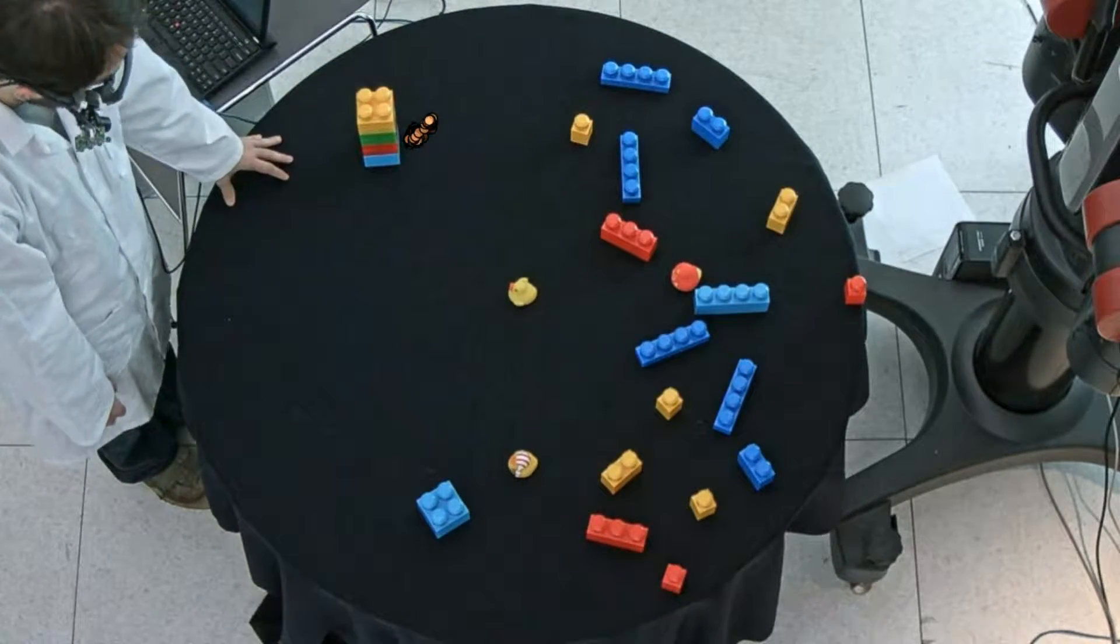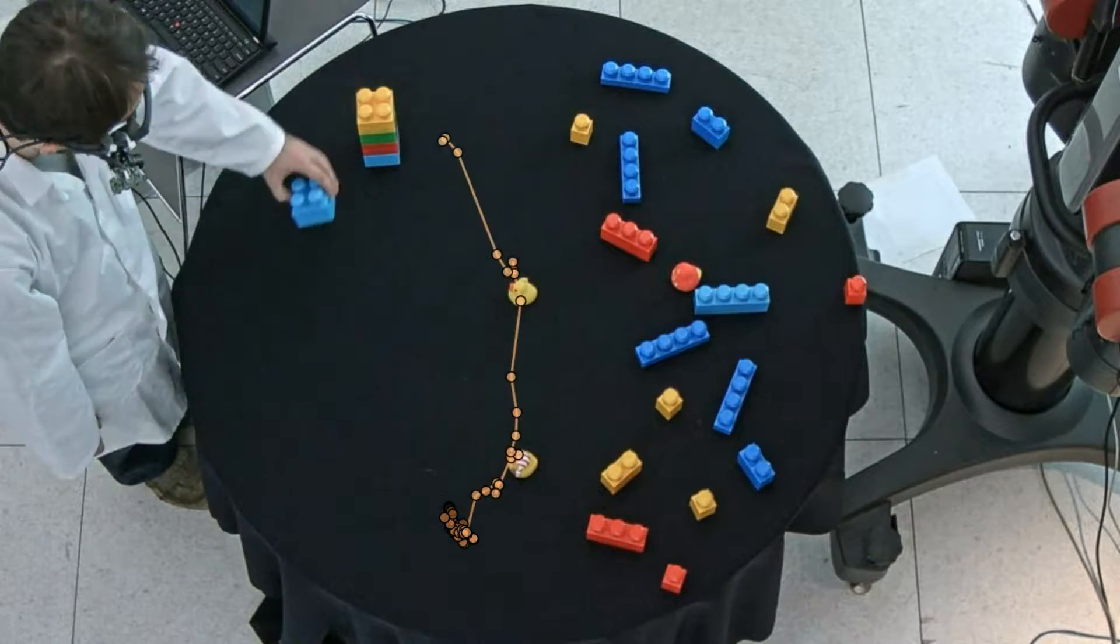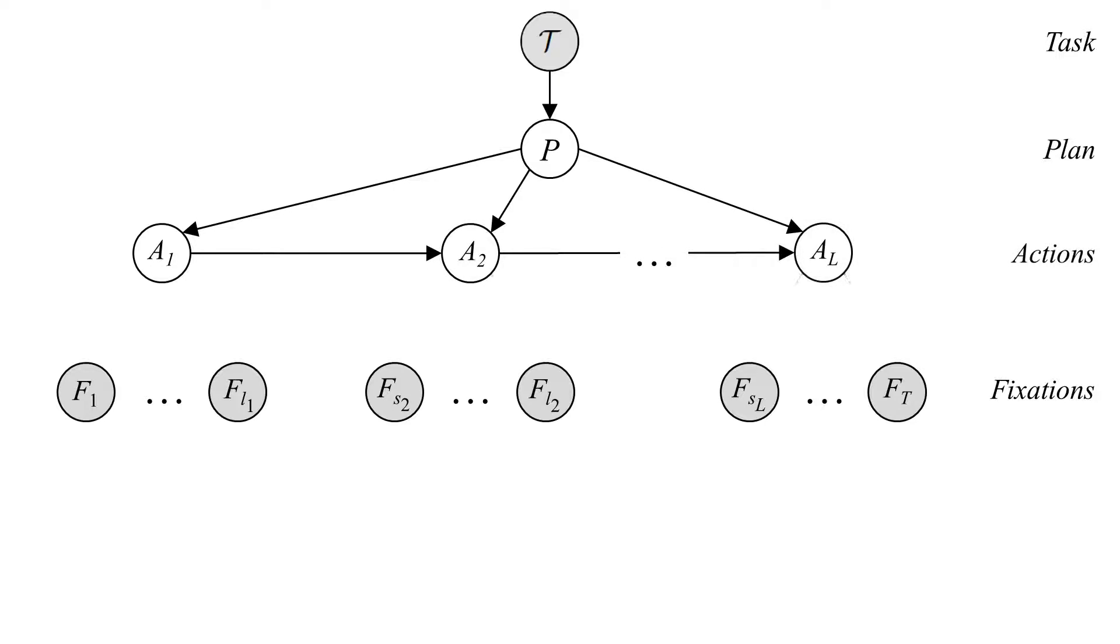Following the idea that fixations are determined by the task and the context, we design a generative probabilistic model. We assume that the task and the fixation sequences are known. Generally, there are multiple plans which complete the task and are composed of a series of actions.